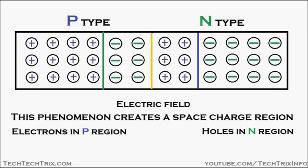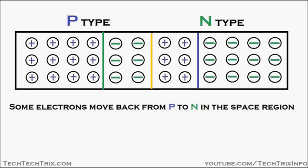An electric field is also created in this space charge region because of the movement of these holes and electrons, and the direction of the electric field is from the N-type region towards the P-type region.